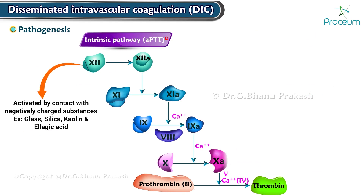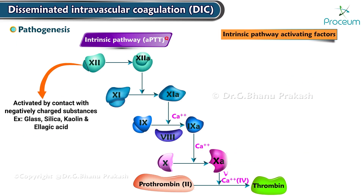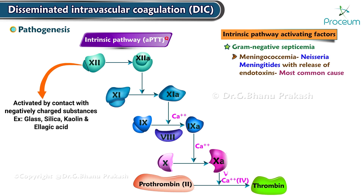The intrinsic pathway is triggered by the activation of factor 12 by surface contact, collagen, or other negatively charged substances. Gram-negative septicemia like meningococcemia caused by Neisseria meningitidis with release of endotoxin is the most common cause of disseminated intravascular coagulation.